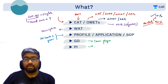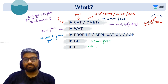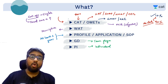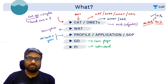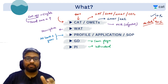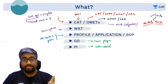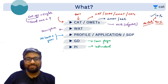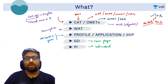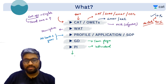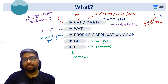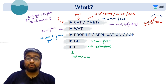Only after clearing your entrance, WAT, profile selection, GD, and PI do you get selected. After receiving your joining letter and results, you get called for admission. And mind you — this admission is not your last step, it's your first step.